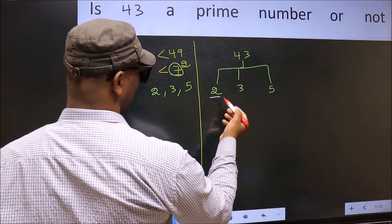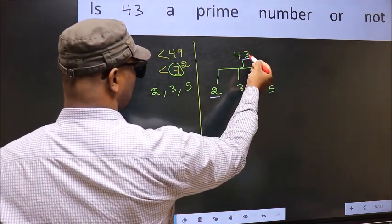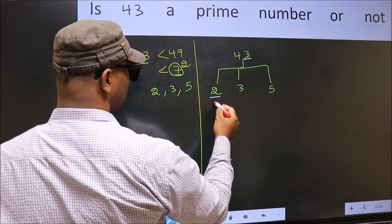First with 2. Last digit 3, not even. So this is not divisible by 2.